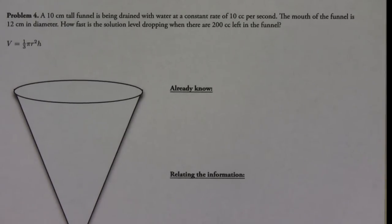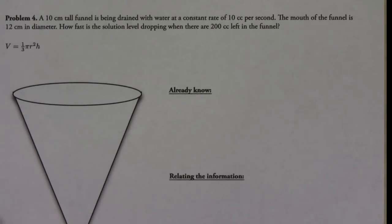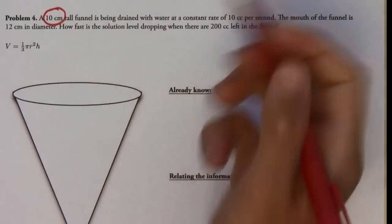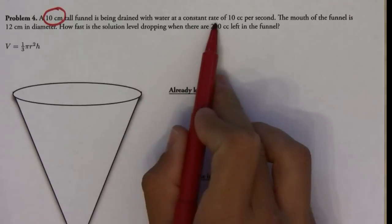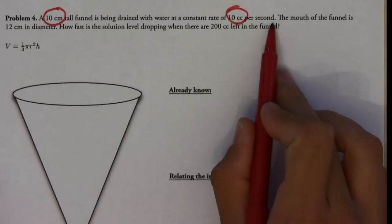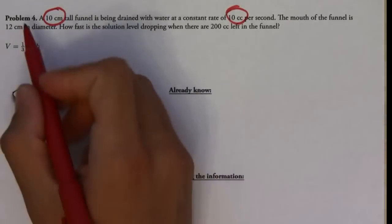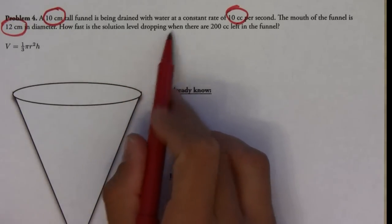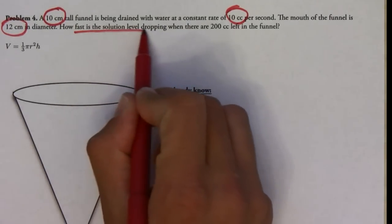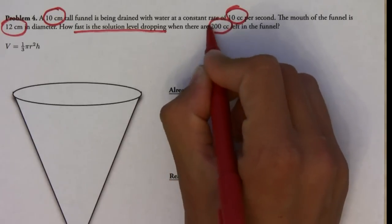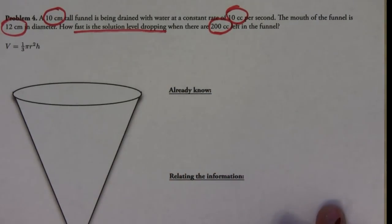Here we have a cone related rate problem. It says that a 10 centimeter tall funnel is being drained with water at a constant rate of 10 cubic centimeters per second. The mouth of the funnel is 12 centimeters in diameter. How fast is the solution level dropping when there are 200 cubic centimeters left in the funnel?